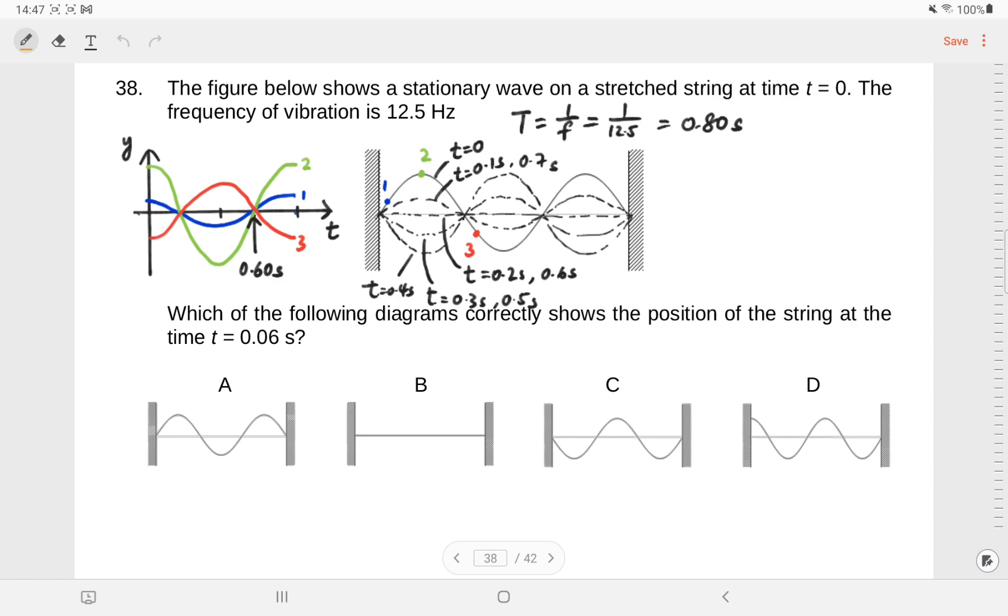Those are the wave profile of the string line at various times. So one eighth of a cycle later, you'll be like here. Then quarter of a cycle later, flat. Three eighth of a cycle, you'll be here again, bottom. For particle two, then so on and so forth.